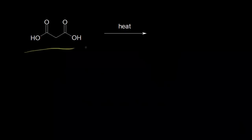Here's a dot structure for propane dioic acid, or malonic acid. If you heat it up, it's going to undergo a decarboxylation reaction. If we show free rotation about this bond — it's a sigma bond — we can show a different conformation.